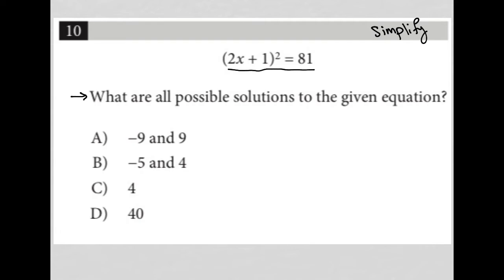So what I like to do is just rewrite that equation. So 2x plus 1 squared equals 81. And then I'm going to simplify it. Because I understand that this format of a question usually means I need to simplify the equation or the expression provided.